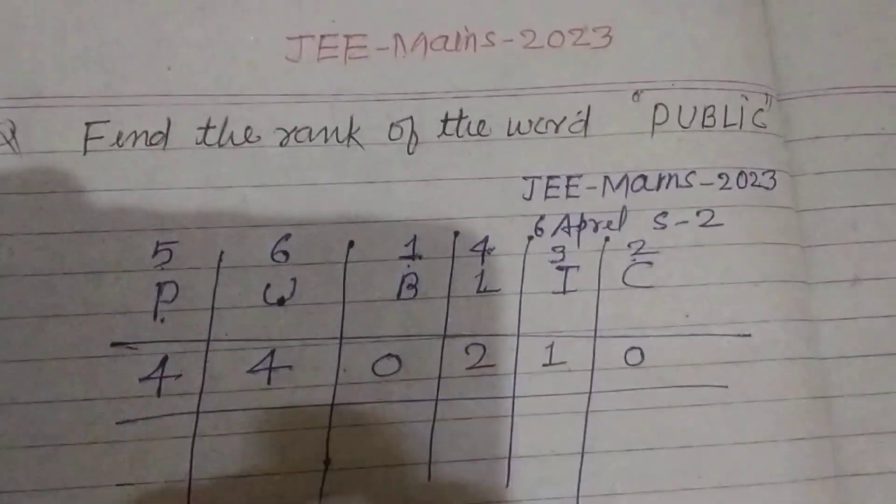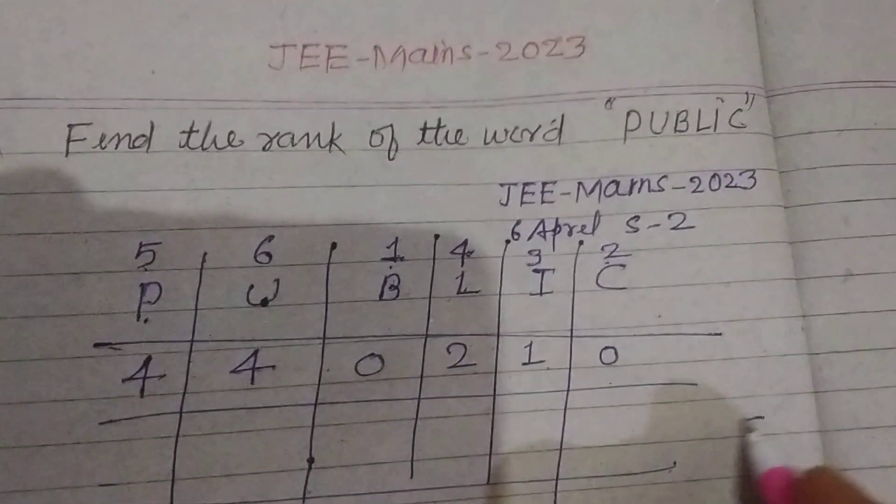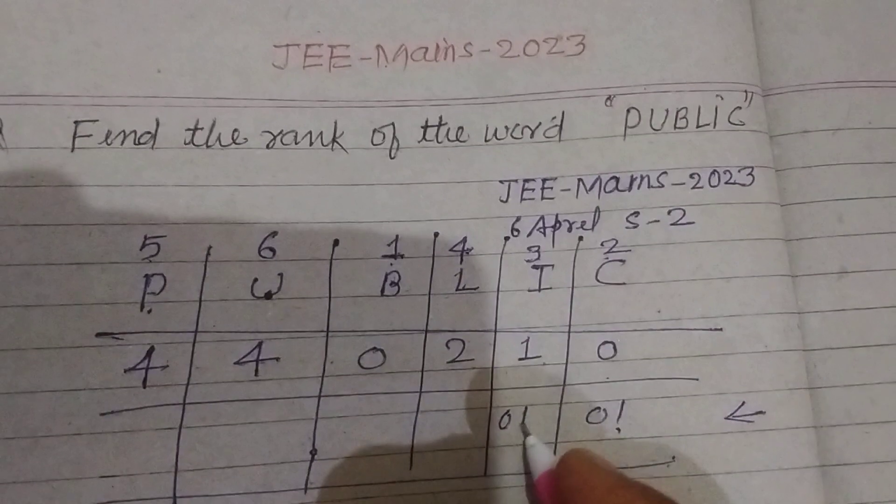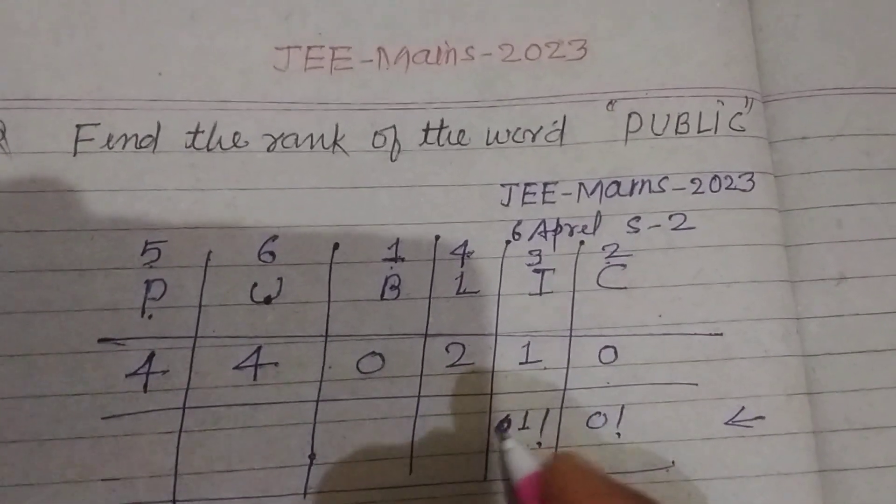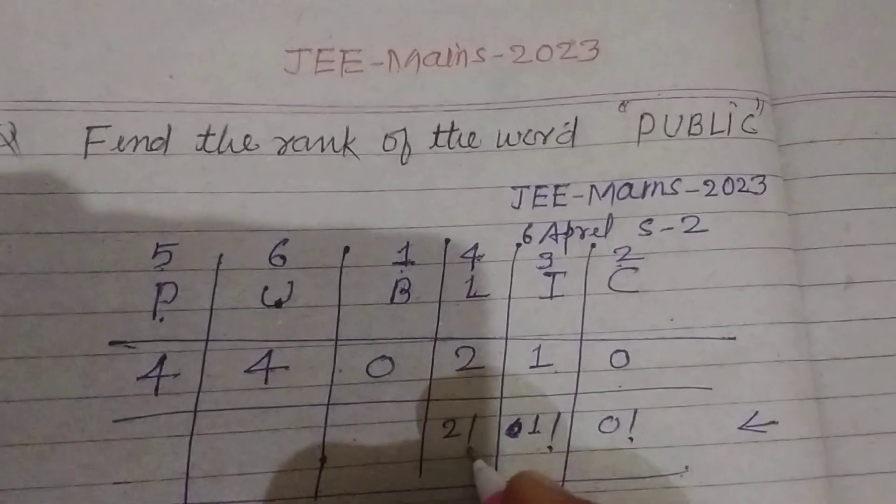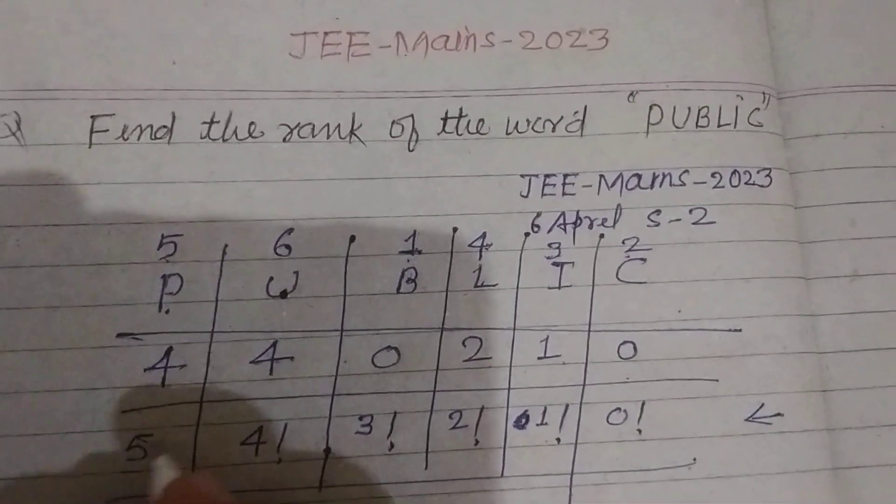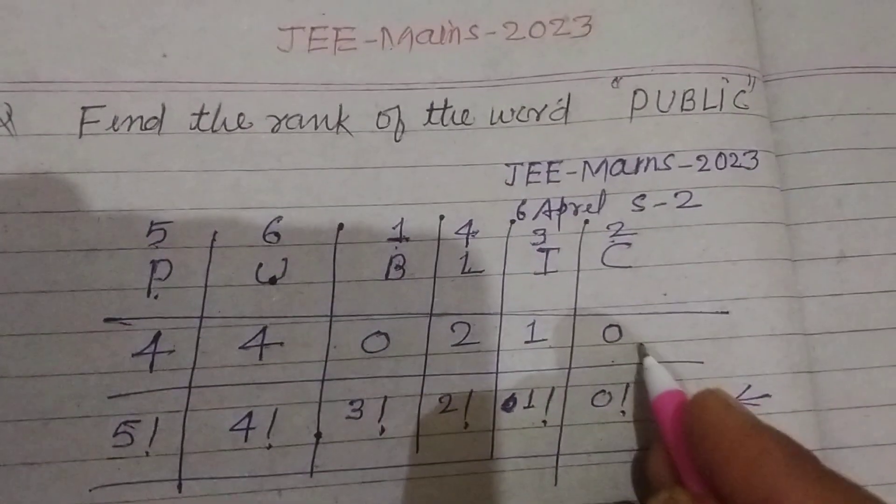Now write from here, from right side: factorial zero, factorial one, factorial two, factorial three, factorial four, factorial five. Now multiply these.